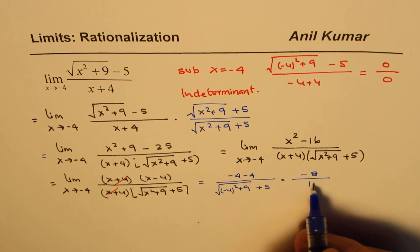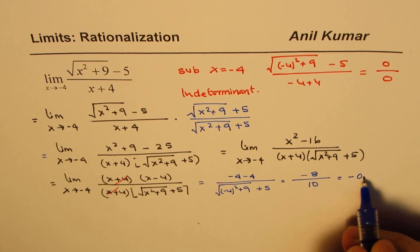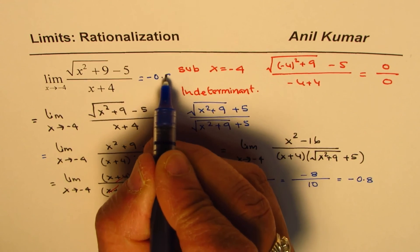That gives minus 8 over... this part is 5, so 5 plus 5 equals 10. The answer is minus 0.8. So the limit of this function is minus 0.8.